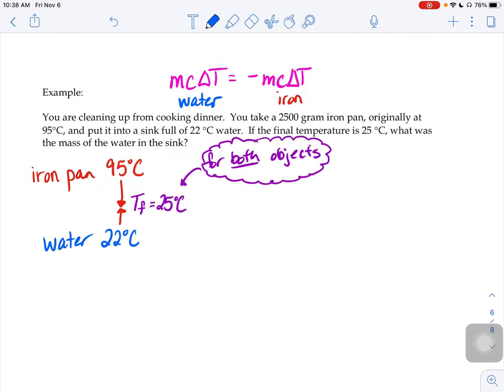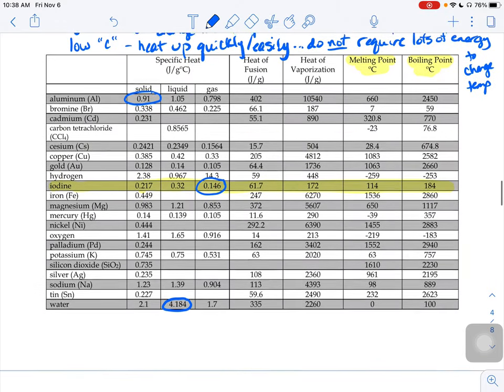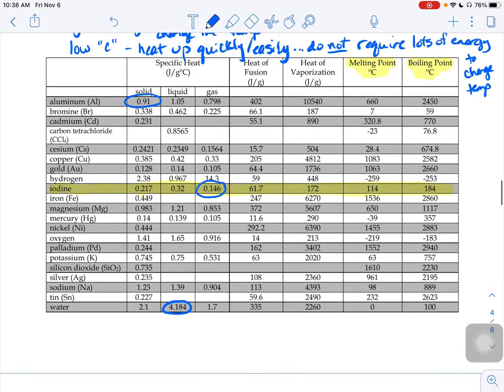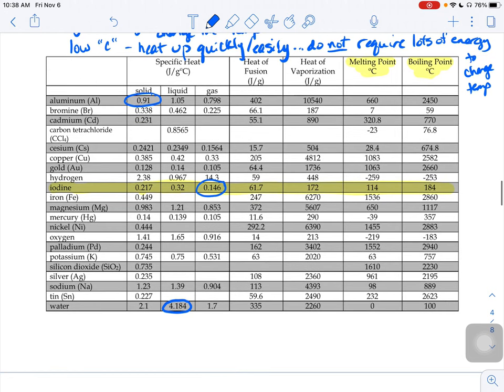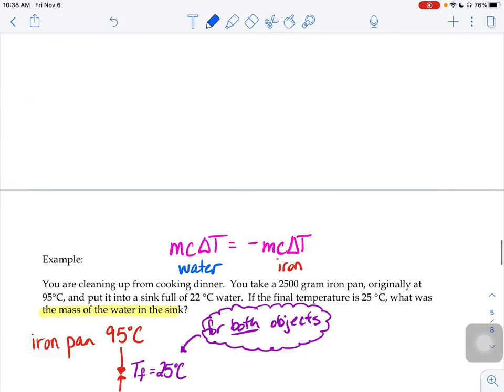So when I go to set this guy up, we're trying to figure out what the mass of the water is, right? That's the part, the component we don't know. So I'm going to plug in M. Now I need the C value for water. So I would go to my chart and find the C value. It's a sink full of liquid water, right? So I'm going to use that number 4.184 as our value for C.